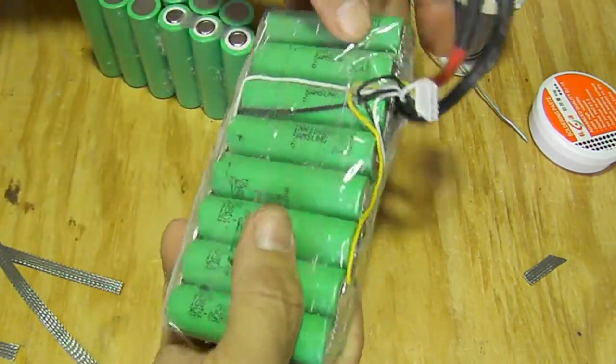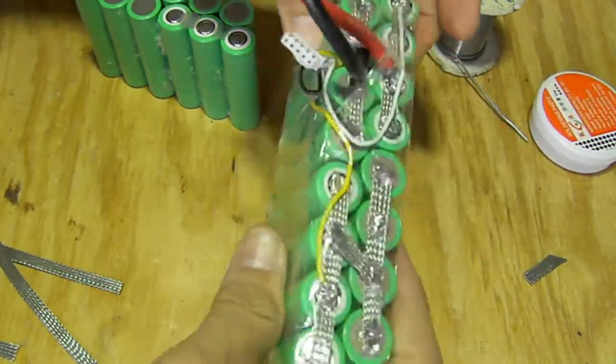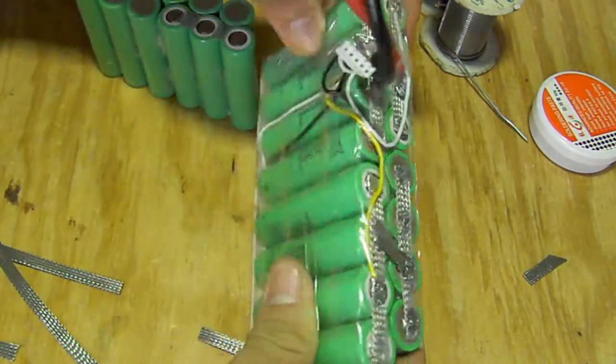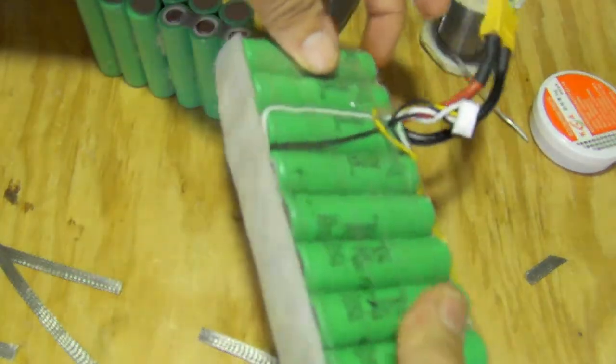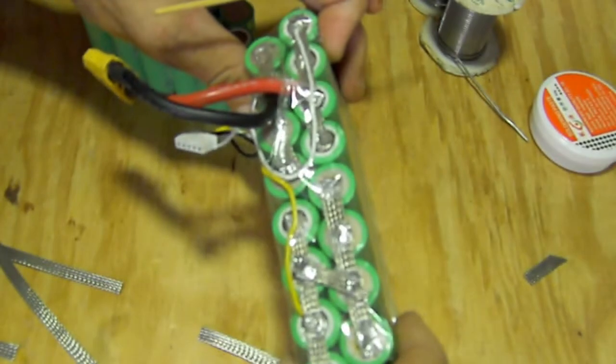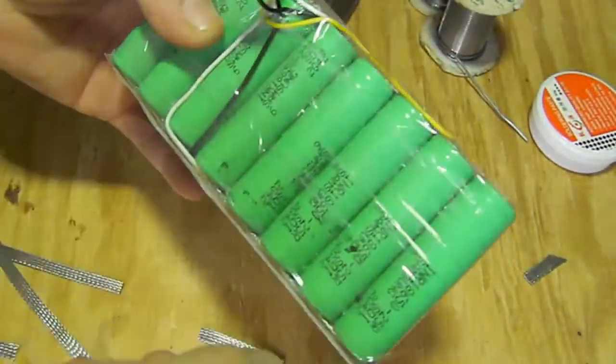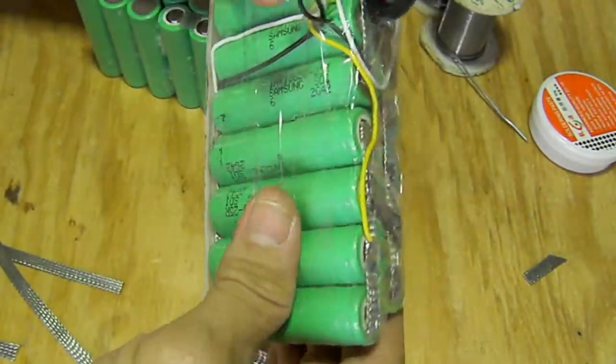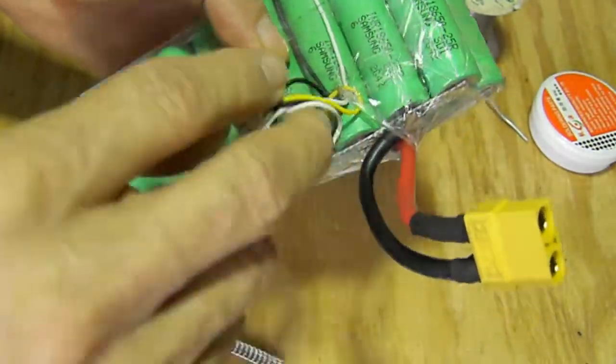But beside that I am pretty happy with this one. This battery right now is at 17 volts because it is a 4-cell. Everything is clearly easy to view. You can see everything right through the tape.